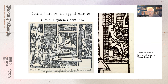This image from 1545 shows a type founder at work, seated — which is interesting. I don't know that I would want to do it sitting down; if I spilled metal I would be unhappy. But he has a leather apron, I suppose, that will help. This is roughly 90 years after the printing of the Gutenberg Bible.